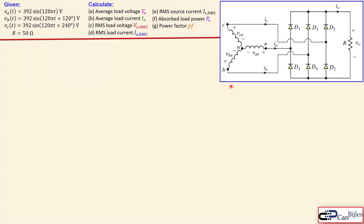This is the circuit we have. You see here the star-connected three-phase source with phase voltages VA, VB, and VC, and also the currents associated with the source. There are six diodes for three-phase rectification and the resistive load. The frequency is 120π radians per second or 60 Hz. The phase voltages are 120 degrees out of phase, and the resistive load is 50 ohms. We want to calculate the average load voltage, average load current, RMS load voltage, and RMS load current.